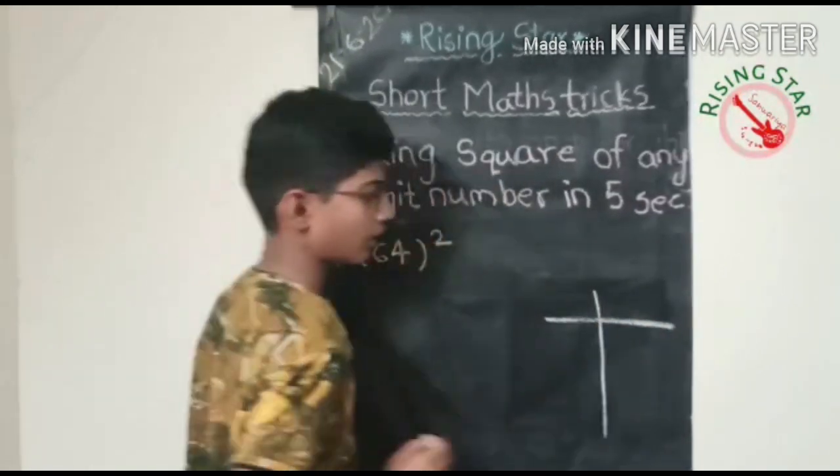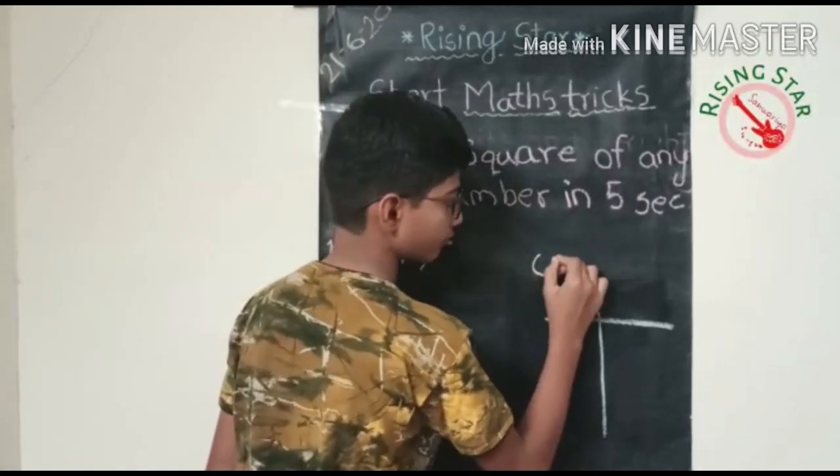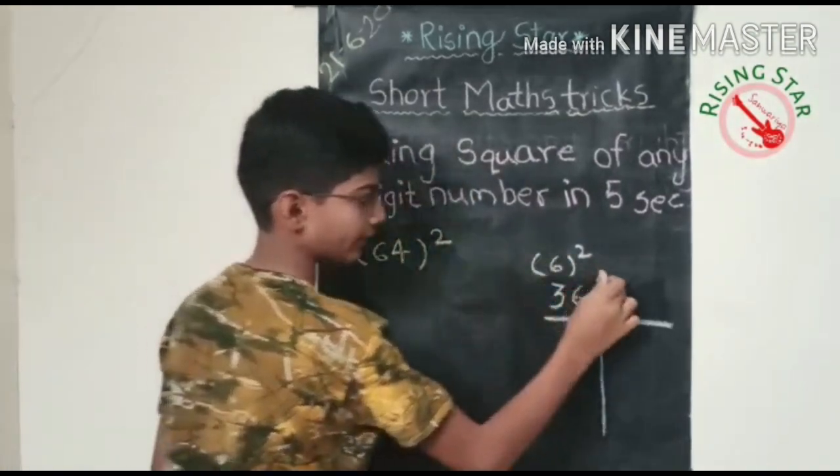And now write six square here, which is thirty-six, and four square here, which is sixteen.